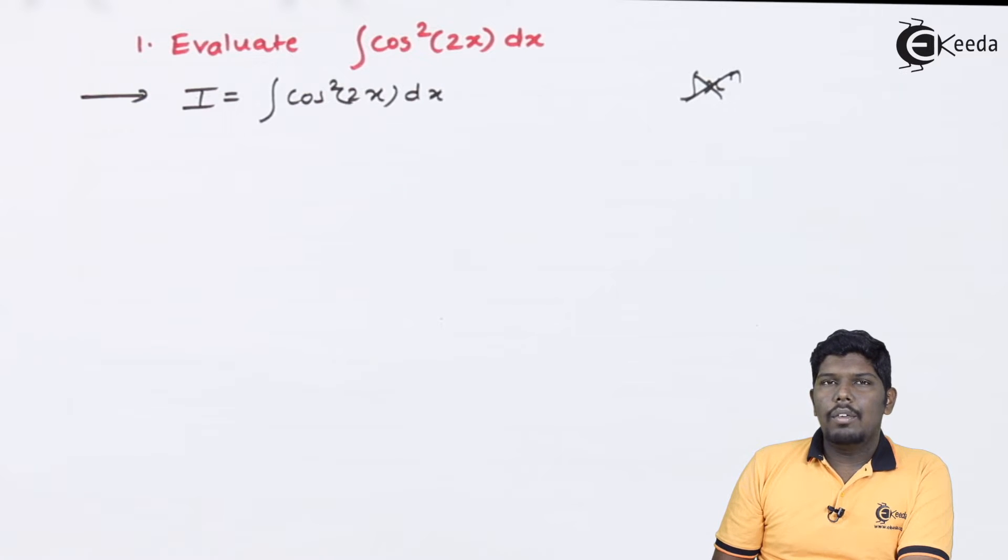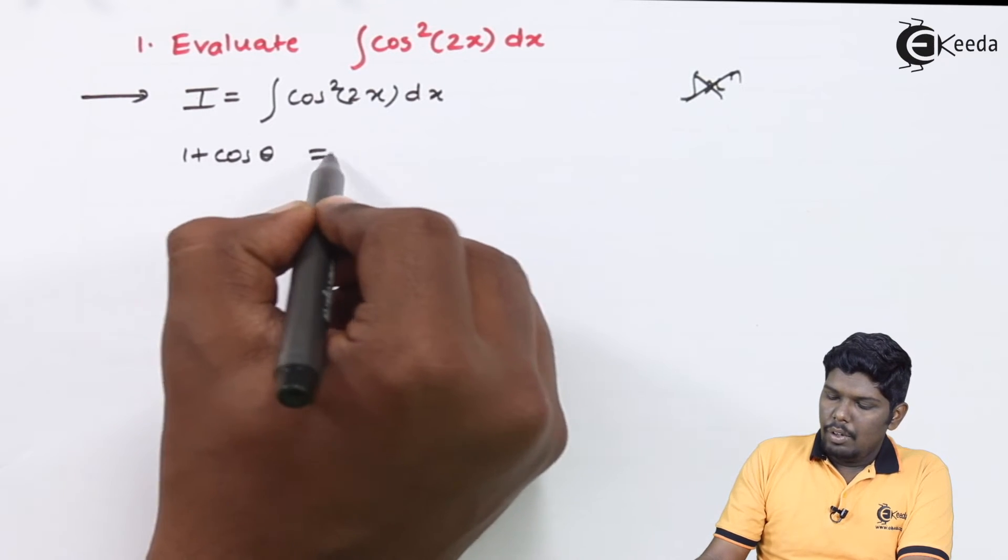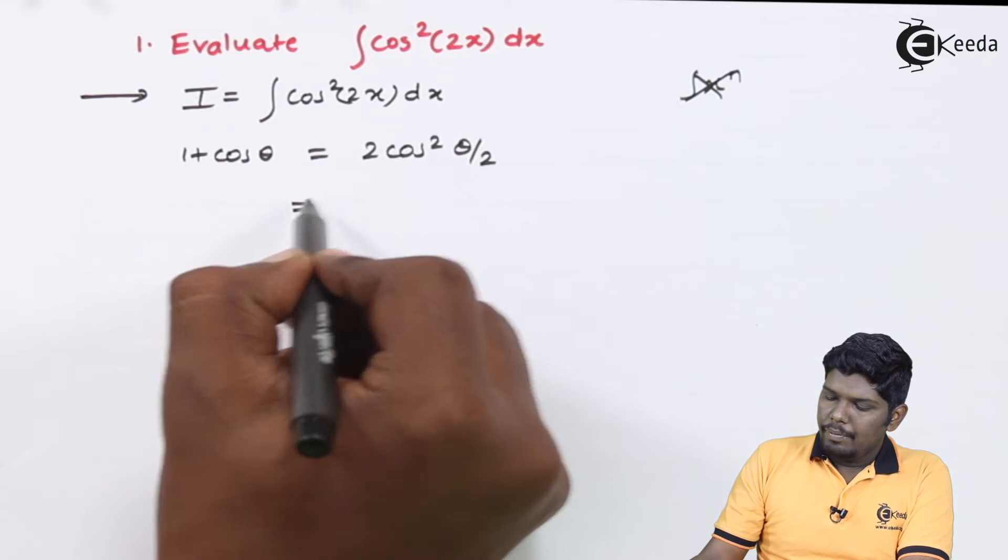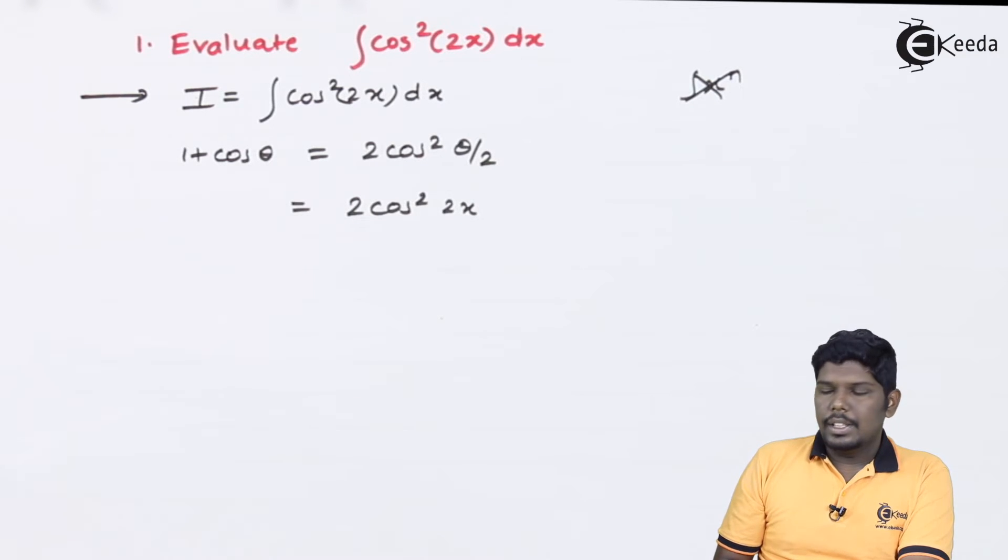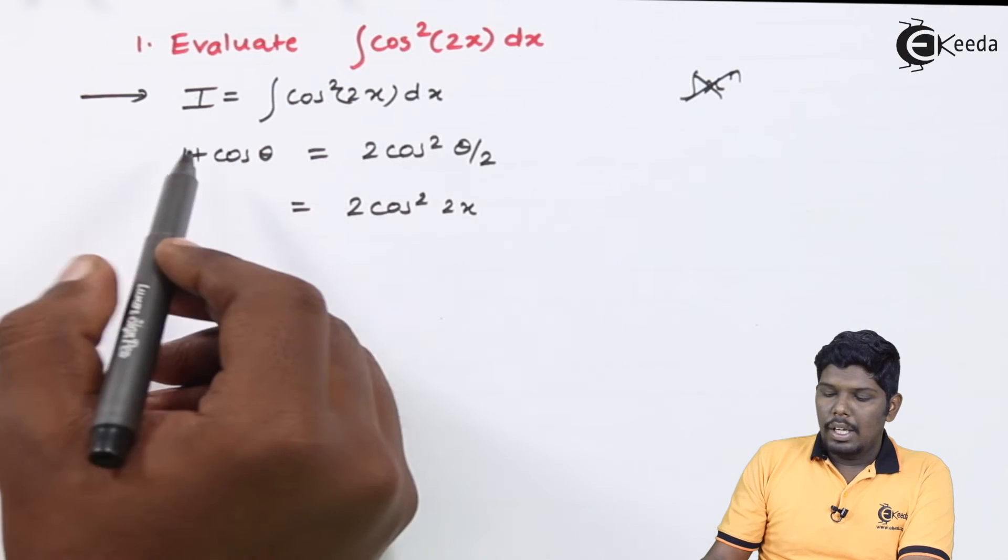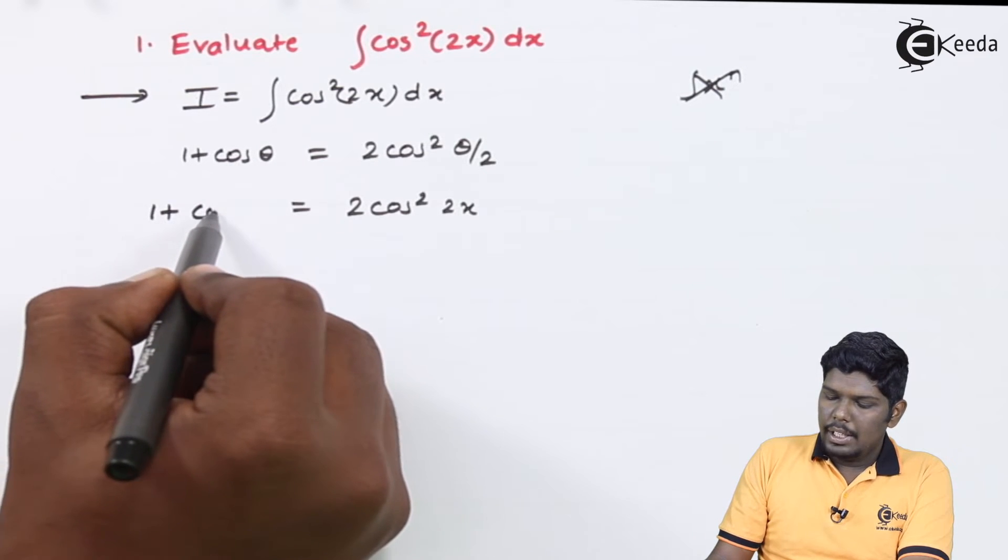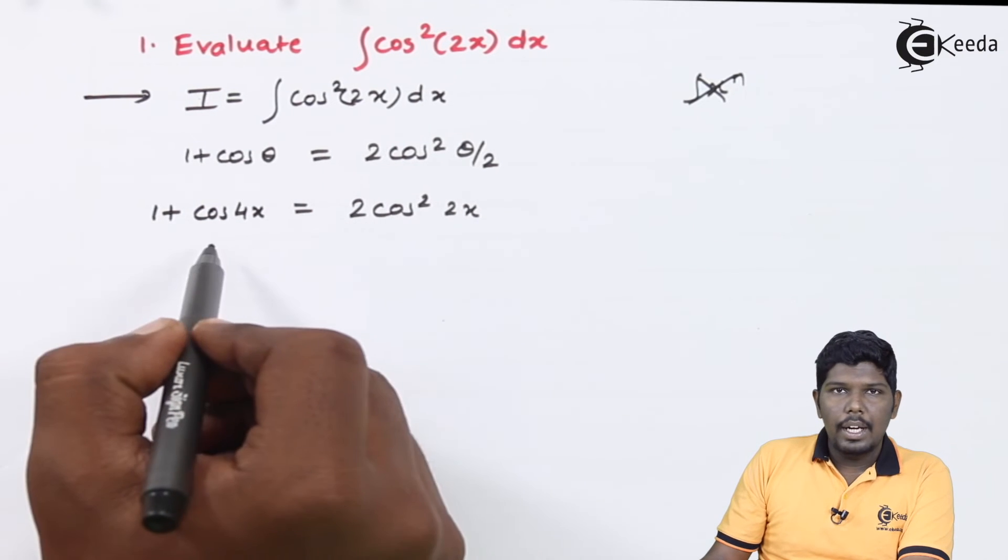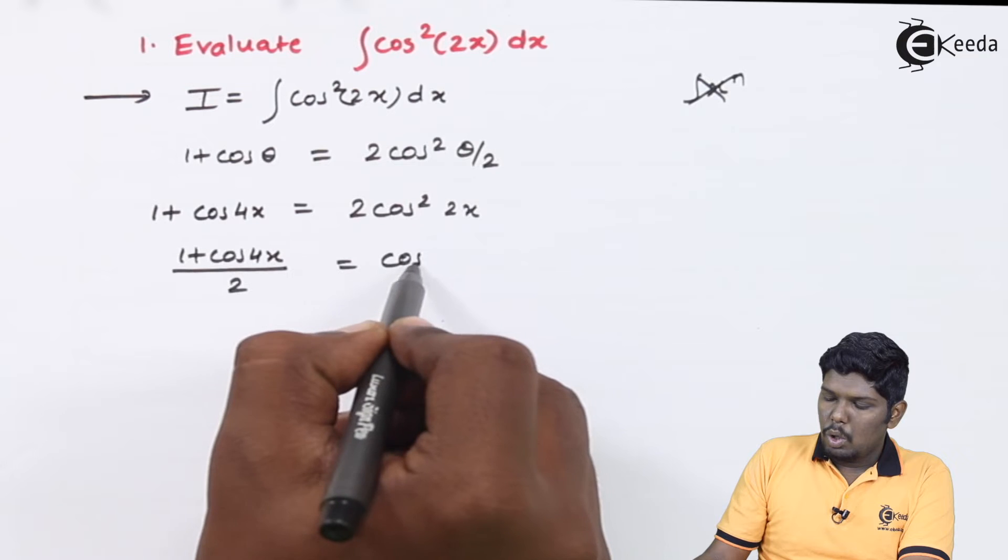Now we know that to get the value of cos square 2x, we can use the formula which is half angle formula in trigonometry that is 1 plus cos theta. We know it is 2 cos square theta by 2. Similarly, if we have 2 cos square, here we have 2x. The relation you can see, if here the angle is theta by 2, on the left hand side it becomes double angle. Therefore, on the left hand side for 2x, we will have its double angle that is 4x. But we only need cos square 2x. Therefore, 2 will be divided. Therefore, we get 1 plus cos 4x upon 2 is equal to cos square 2x.